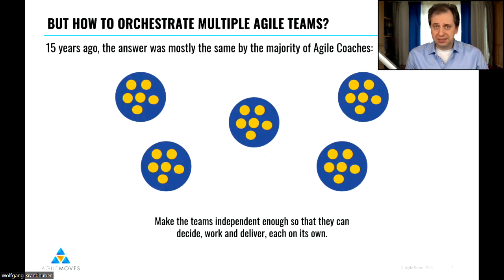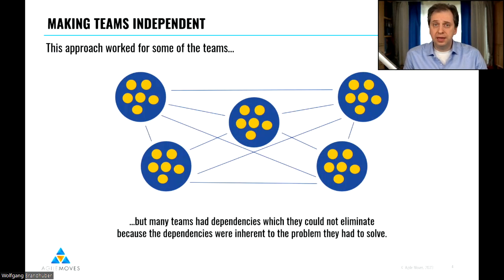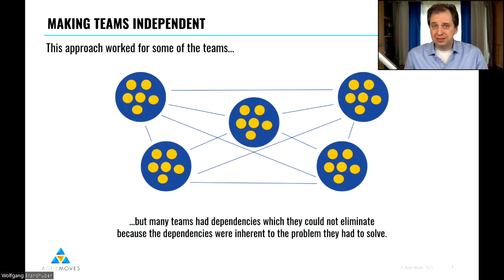When you have a problem to solve with several agile teams, each team has a network structure of its own — but how do you coordinate these agile teams? Looking back about 15 years ago, the answer was pretty much the same: make the teams independent enough so they can decide, work, and deliver each on their own. This worked for some teams, but for others it didn't, because there was an inherent complexity — you couldn't get rid of some dependencies without losing some of the value you wanted to create in the first place.